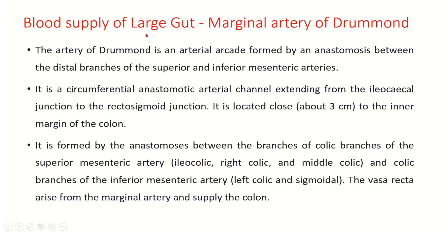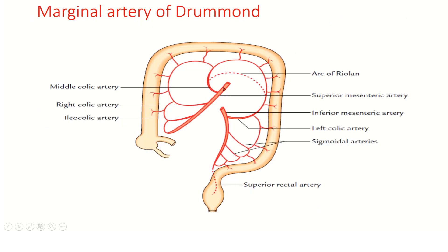The large gut is supplied mainly by the marginal artery of Drummond. This is an arterial arcade formed by anastomosis between the distal branches of the superior and inferior mesenteric arteries. It is a circumferential anastomotic arterial channel extending from the ileocolic junction to the rectosigmoid junction, located close to the inner margin of the colon at approximately three centimeters. Vasa recta arise from the marginal artery to supply the colon. You can see the superior mesenteric artery giving the middle colic, right colic, and ileocolic arteries, and the inferior mesenteric giving the left colic, sigmoidal branches, and superior rectal artery — all dividing and anastomosing to form the marginal artery of Drummond.